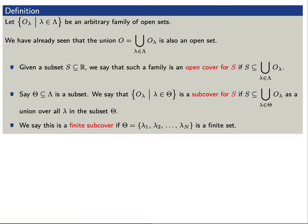Today we'd like to introduce the concept of an open cover. Let O sub lambda be a family of open sets where lambda ranges over some indexing set capital Lambda. We've already seen that the union over elements in this family is also an open set. Given a subset S, we'll say that such a family is an open cover for S if S is contained in this union. If capital Theta is a subset of this indexing set capital Lambda, we'll say that the collection O sub lambda, where lambda is in capital Theta, is a subcover for S if S is contained in the union over lambda in capital Theta. Finally, we'll say that this is a finite subcover if the indexing set capital Theta is a finite set.